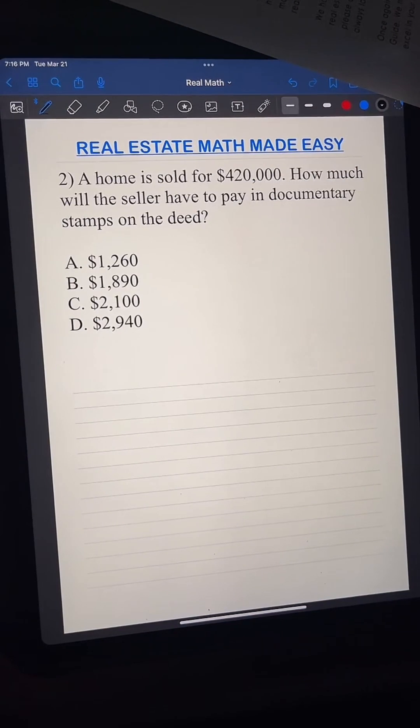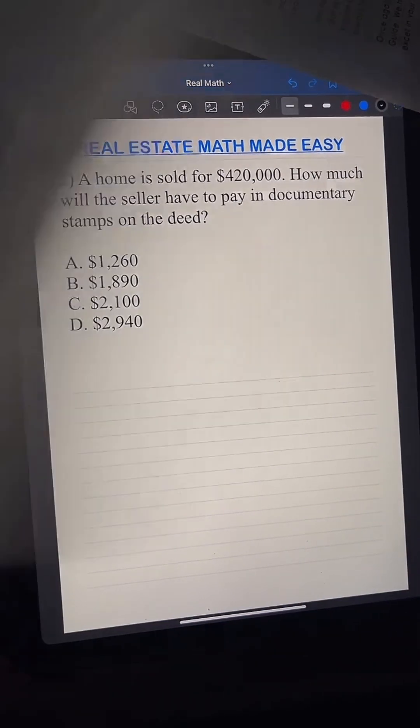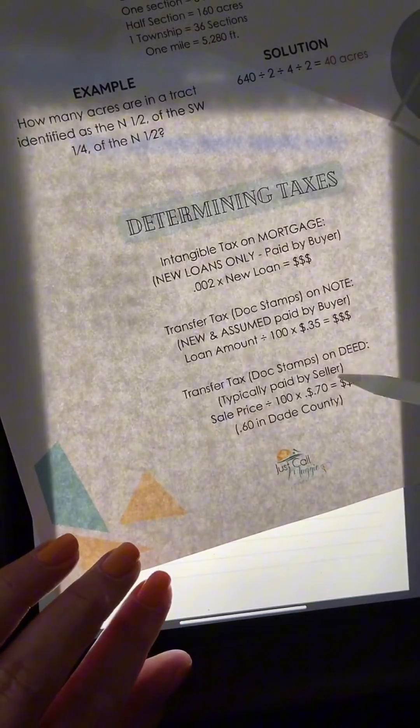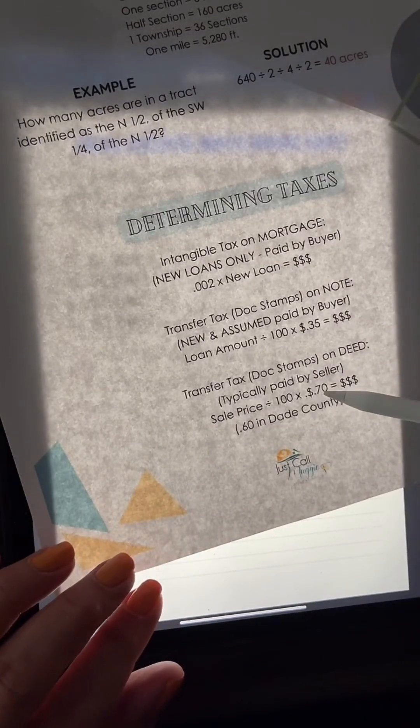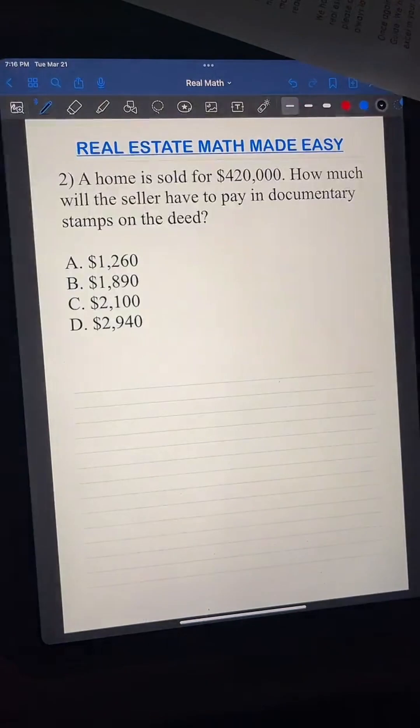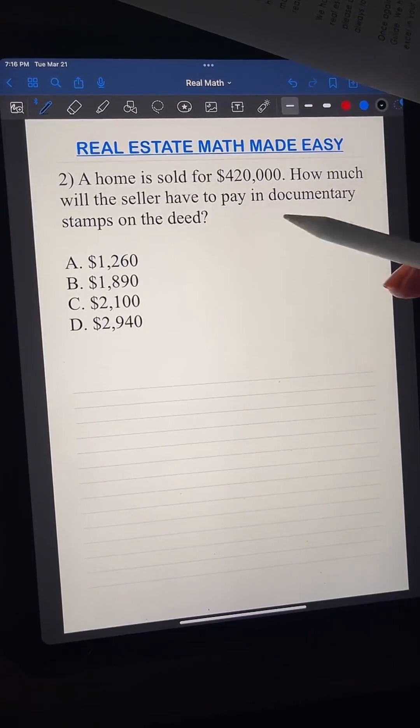Remember, a note is like a mortgage, something that you're paying, like a car or a house, okay? So doc stamps on the deed is 7 mils. So here, I would say, if it doesn't tell you that the property is not in Miami-Dade County, then you will use the 7 mils.